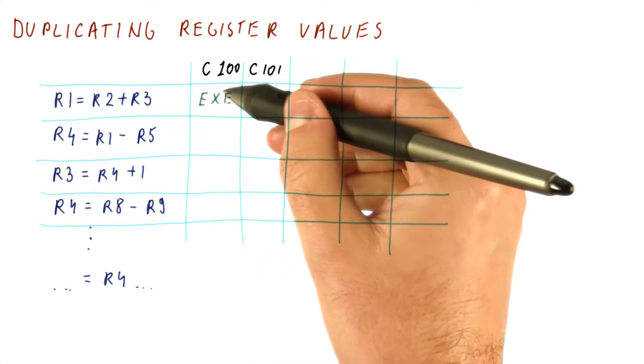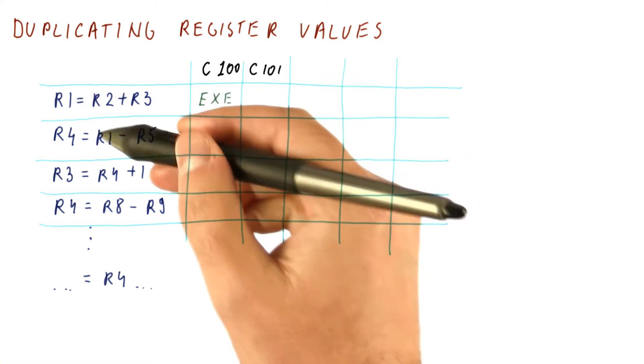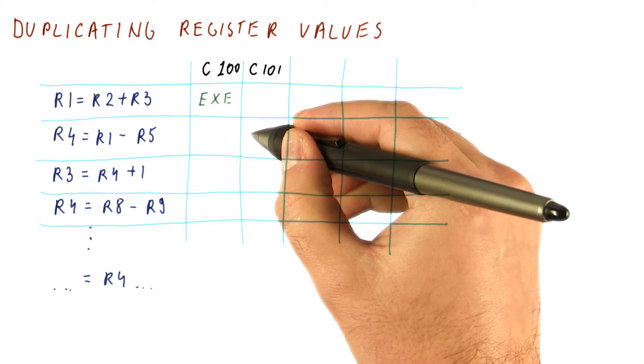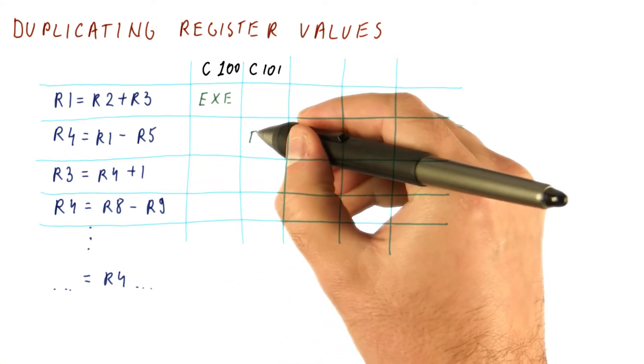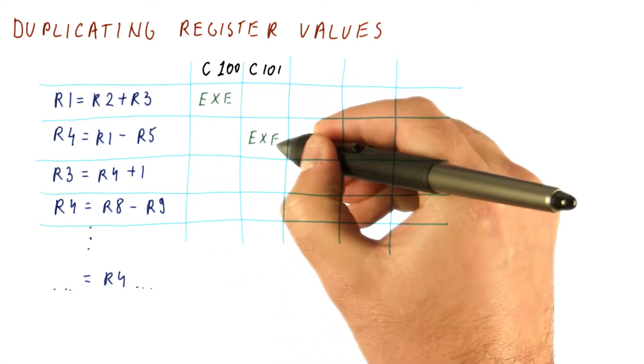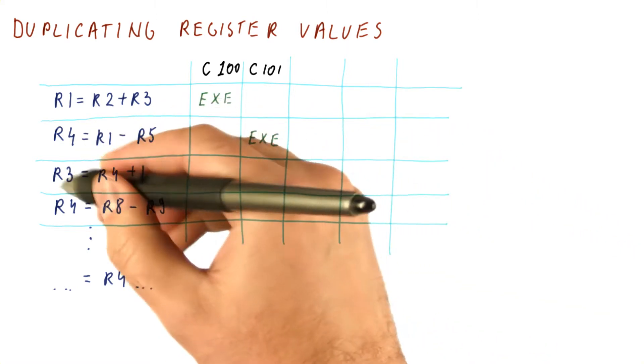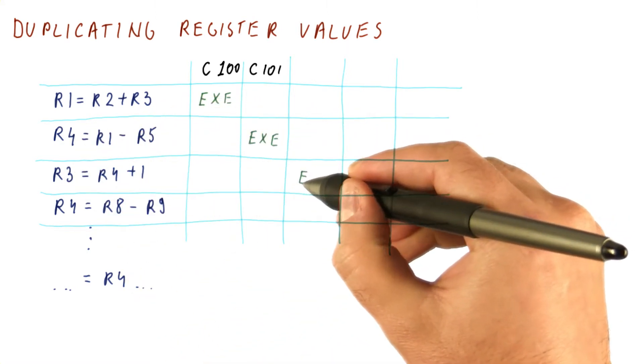Now what happens is after we execute this instruction, it can supply the register value R1 through forwarding to the next instruction. So this instruction can execute here, and then R4 can be supplied to the next instruction, so it can execute here.